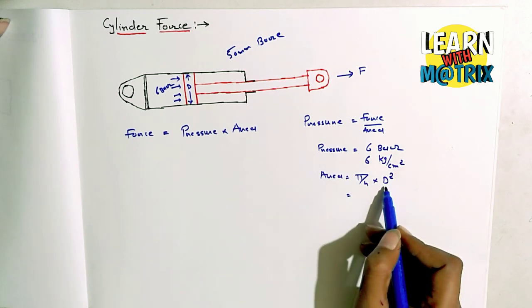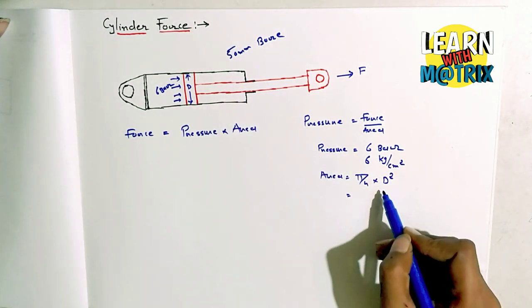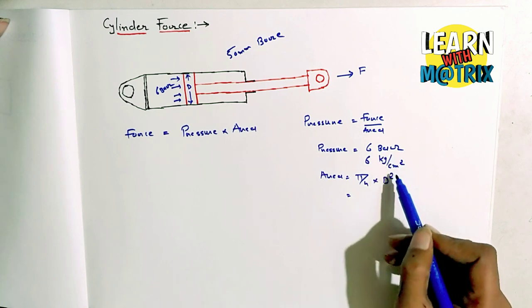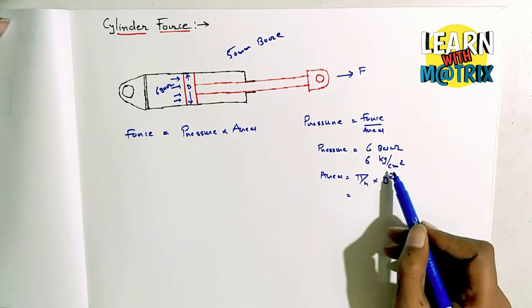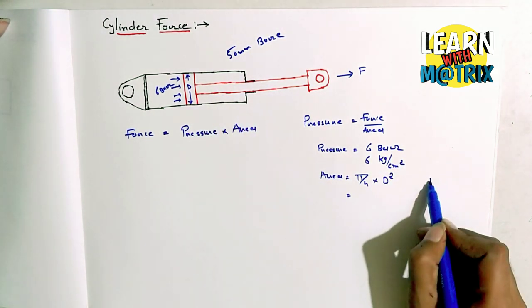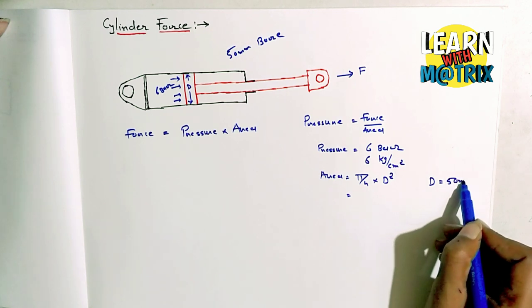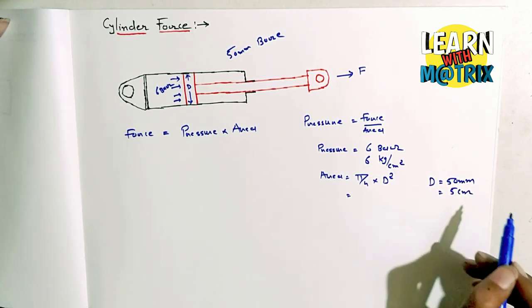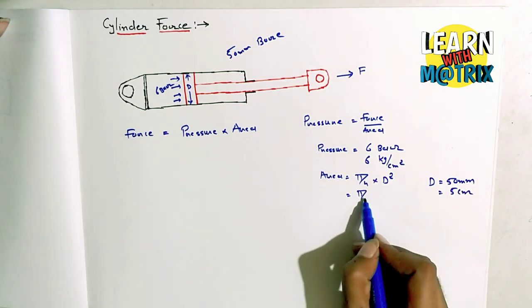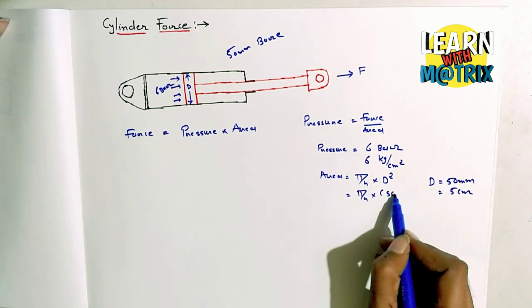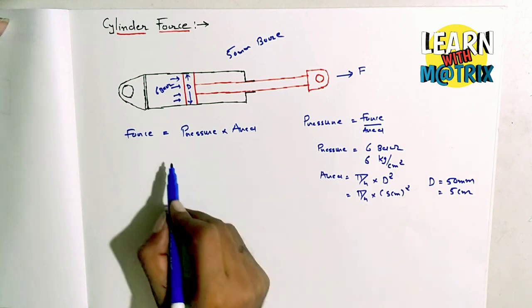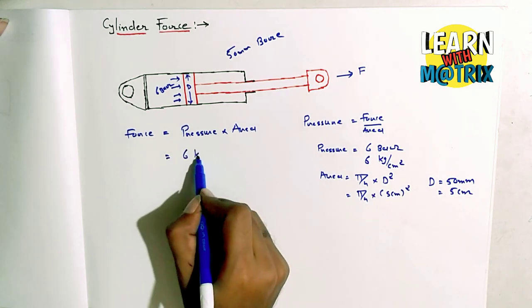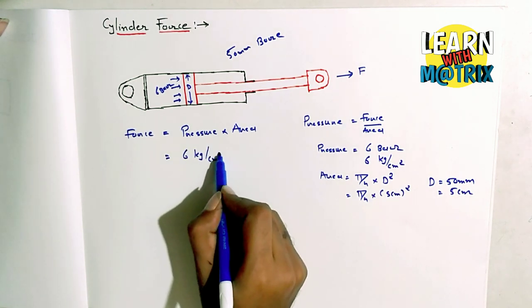So d we know is 15. As you see, friends, bar means in centimeters, so 15 mm we need to convert to centimeter - 1.5 centimeter. So pi by 4 into 1.5 centimeter square, so pressure is equal to 6 kg per centimeter square